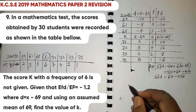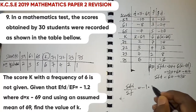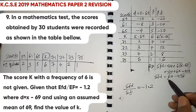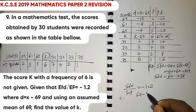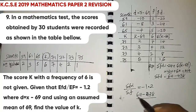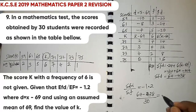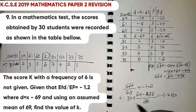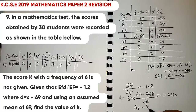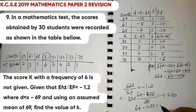Using the equation summation of fd divided by summation of f = -1.2: (6k - 438)/30 = -1.2. Multiplying both sides by 30: 6k - 438 = -36.